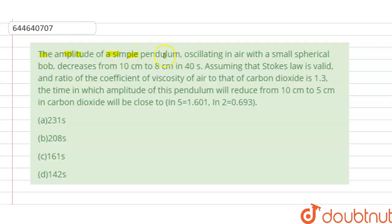Amplitude of a simple pendulum oscillating in air with a small spherical bulb decreases from 10 centimeter to 8 centimeter in 40 seconds. Assuming that Stokes' law is valid here, and the ratio of the coefficient of viscosity of air to that of carbon dioxide is 1.3,